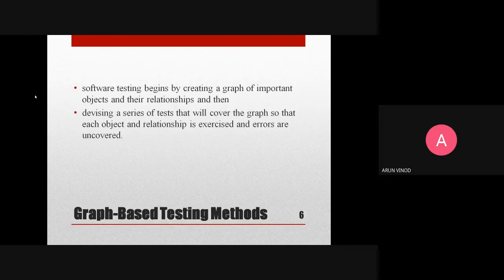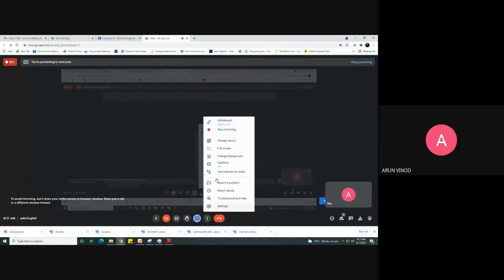The first method is graph-based testing. Software testing begins with creating a graph of important objects and their relationships. As a first step, you create a graph consisting of nodes and directed links. You then devise a series of tests that will cover the graph so that each object and relationship is exercised and errors are uncovered.